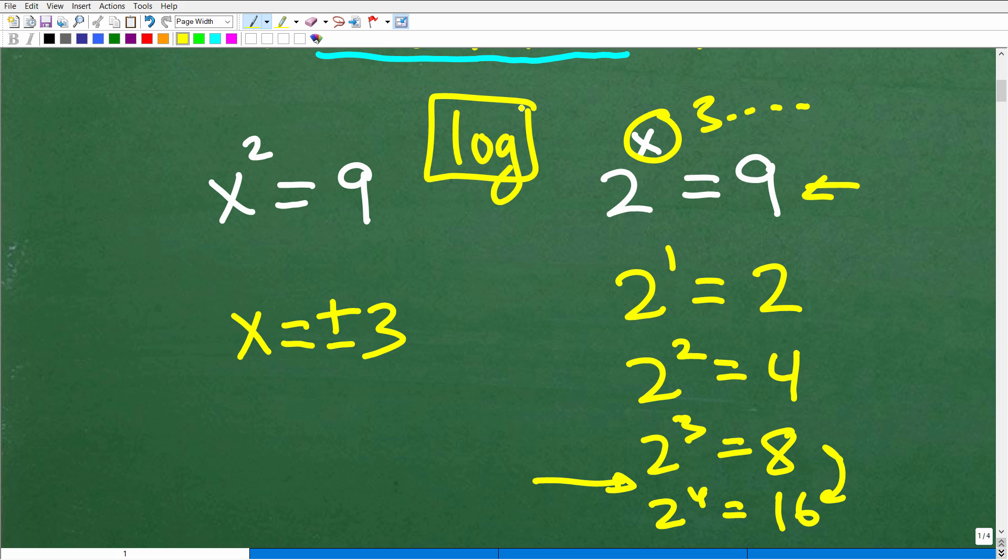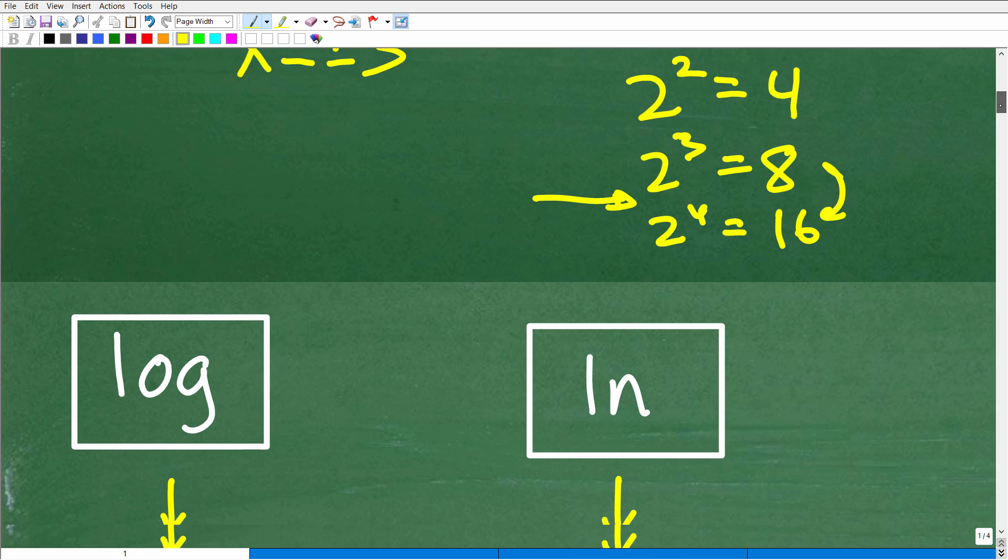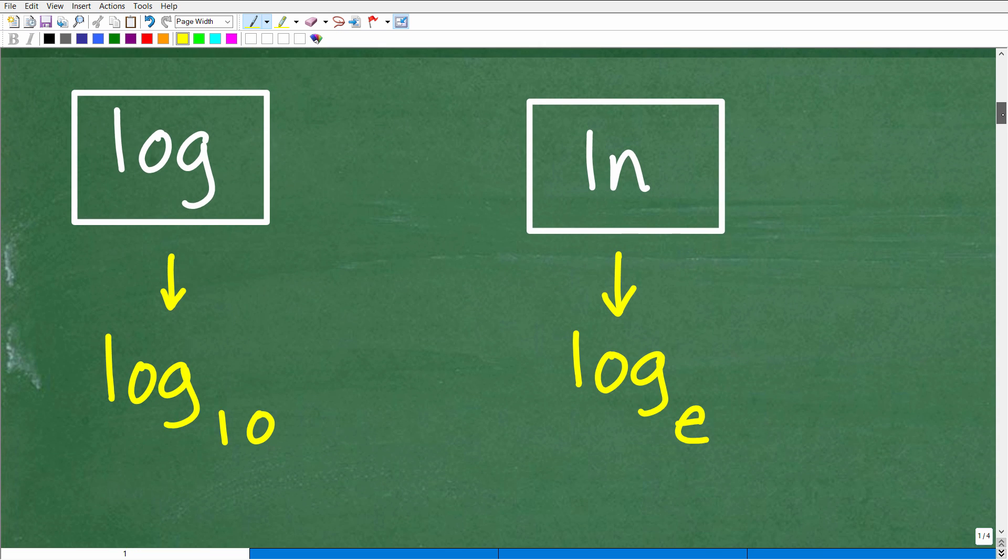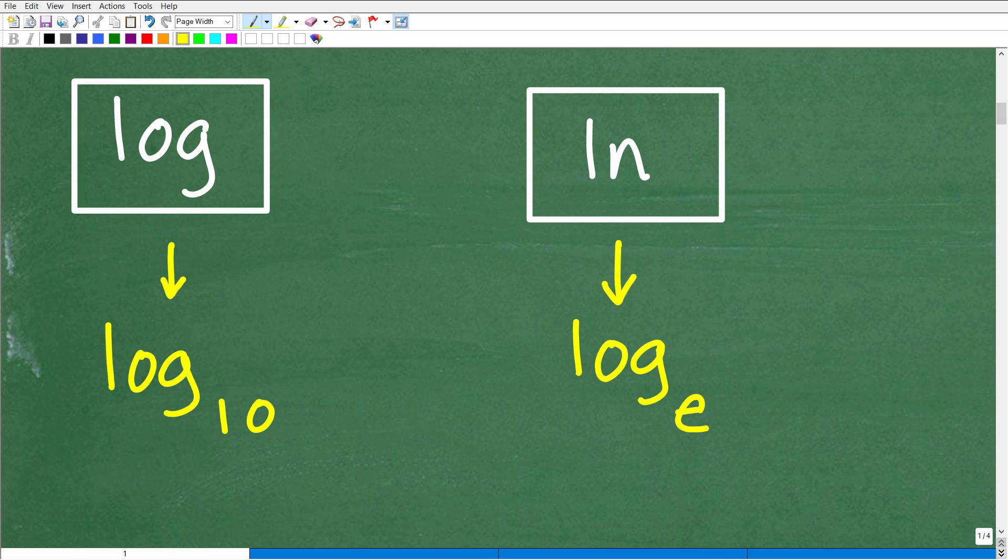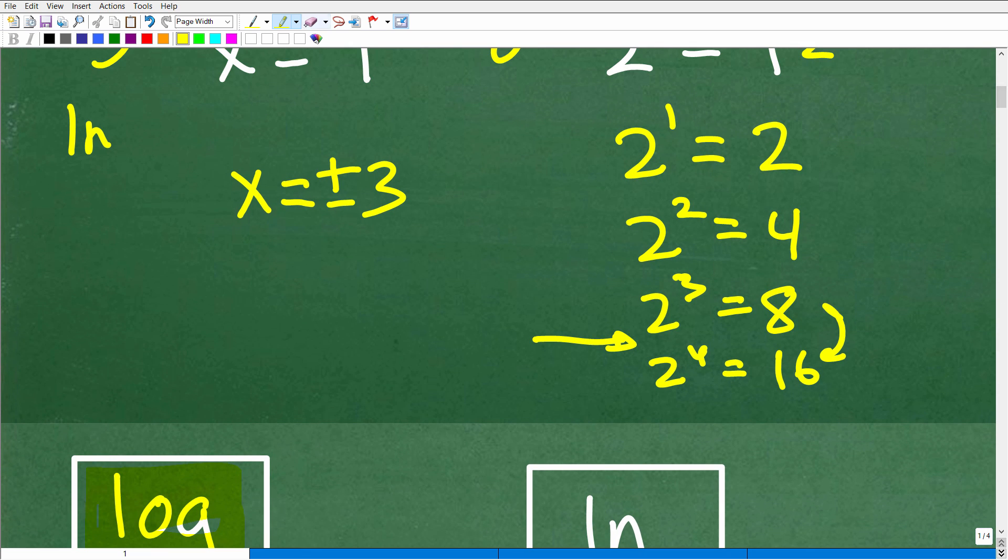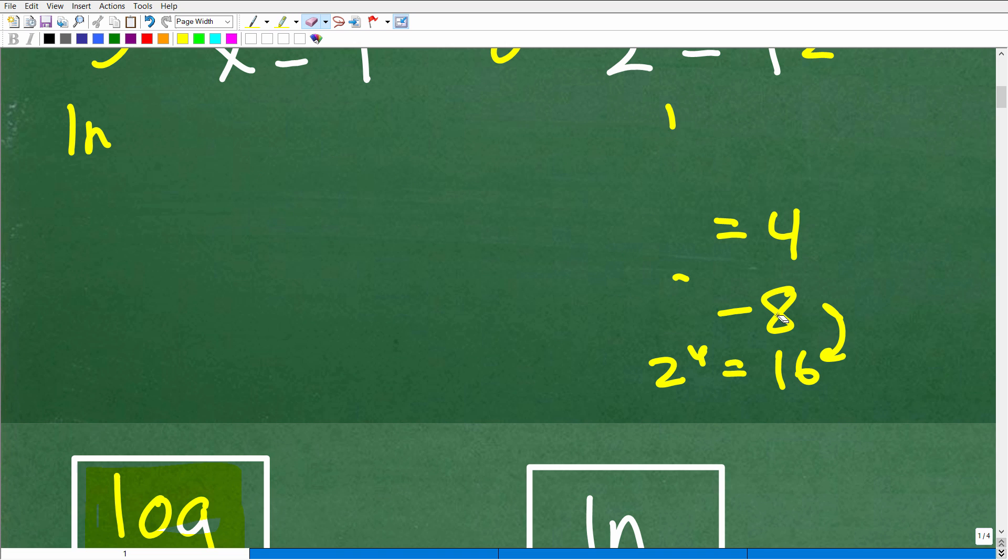If you look on your calculator, if you have a scientific calculator, you'll see these two buttons: LOG and LN. Let's go ahead and talk about those buttons right now. The LOG button, this is what we call the common logarithm. This is log base 10. Let me just go ahead and do one other quick thing just in case somebody out there forgot.